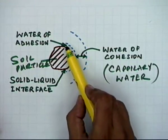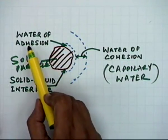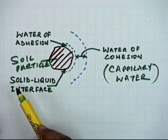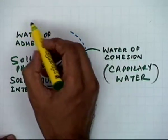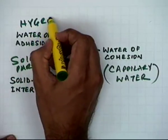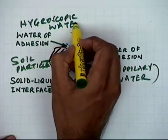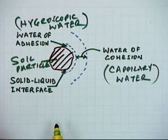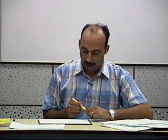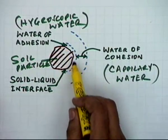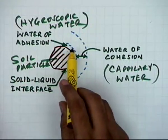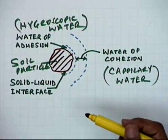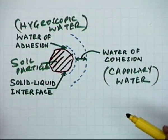The part which is clung to the soil particles because of the adhesive forces is known as hygroscopic water. Both these layers — the thin layer of hygroscopic water as well as the capillary water — have different soil moisture tensions. We had also discussed briefly what we mean by soil water tension.